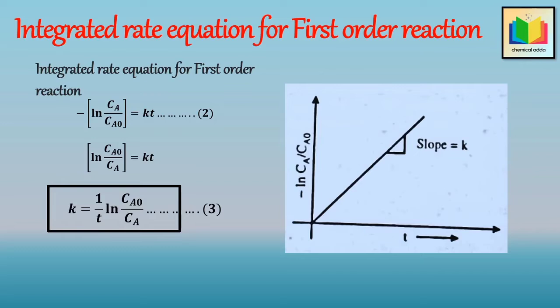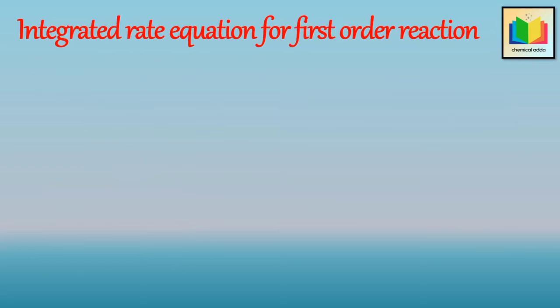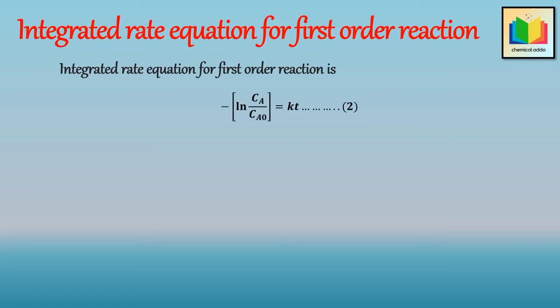Now let's derive this equation in terms of conversion. There are two methods. The first method is where we directly derive the equation from the integrated rate equation in terms of concentration. The second method is where we derive the equation the same way we derived the integrated equation in terms of concentration. Let's see the first method. The integrated rate equation for the first order reaction in terms of concentration is known.